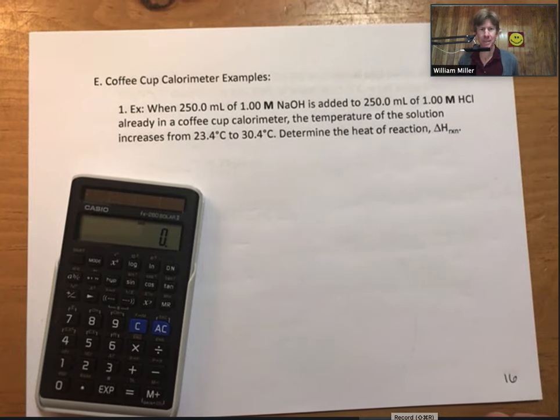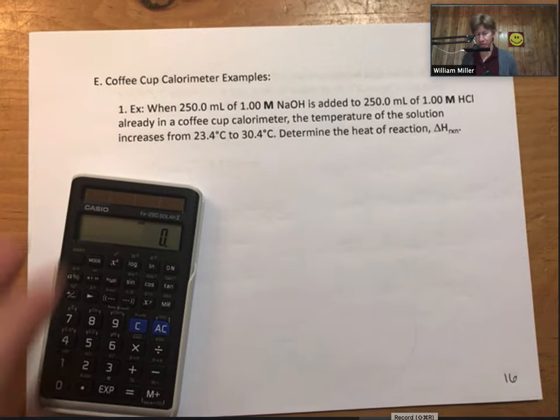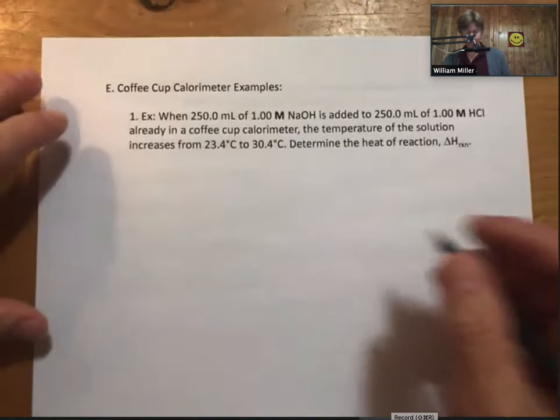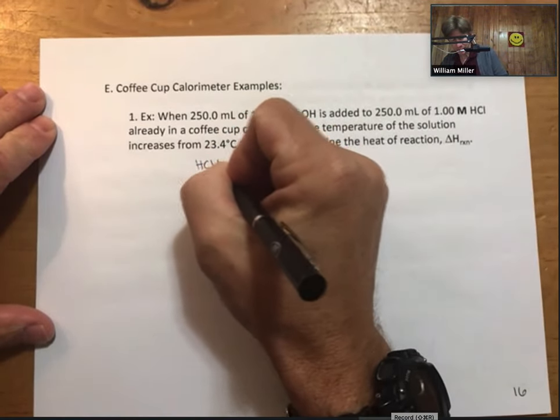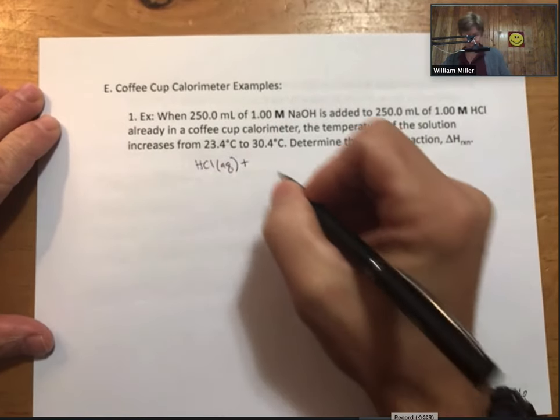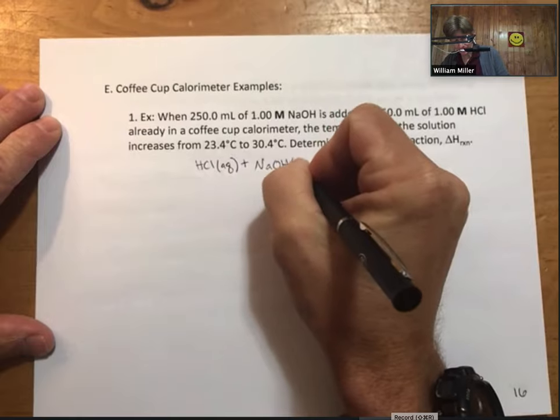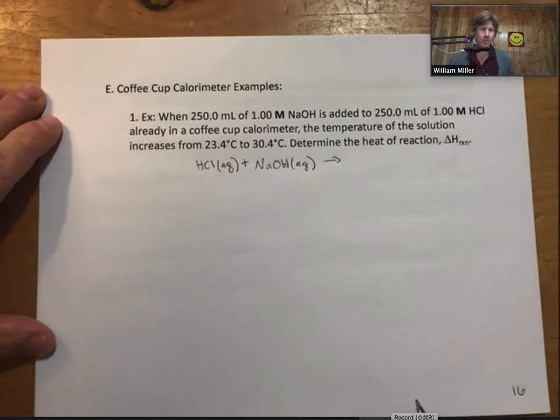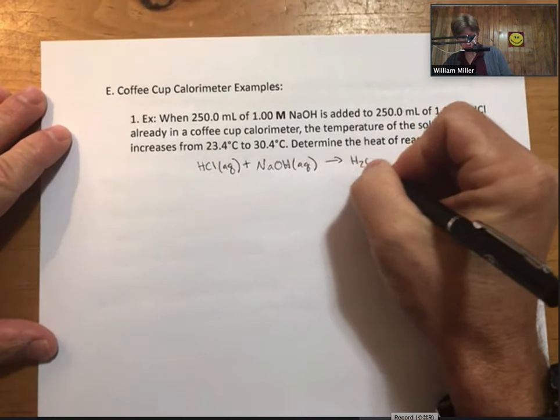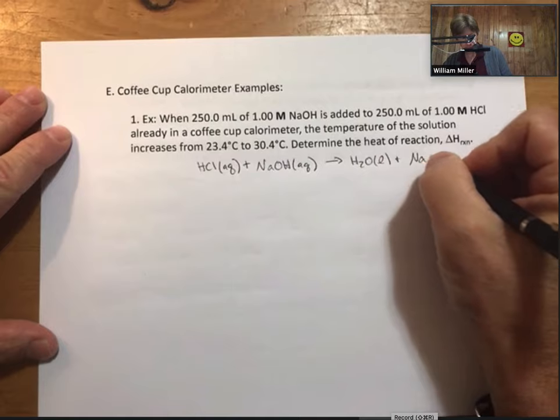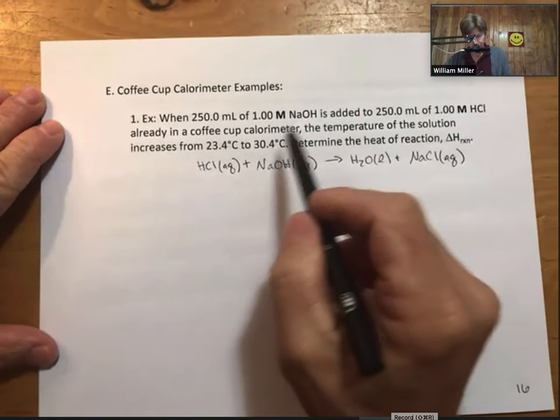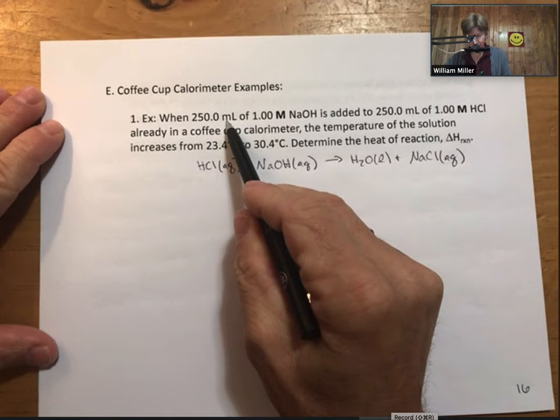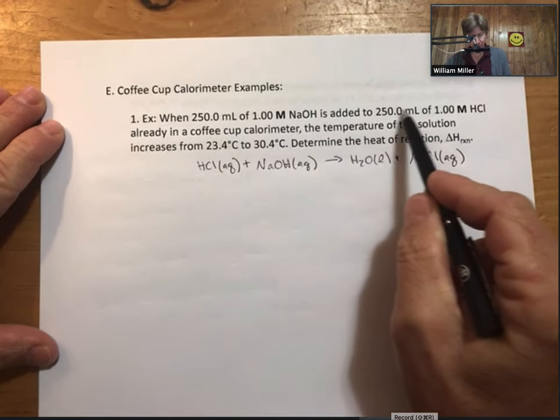The coffee cup calorimeter examples - we'll start with this one in which we are mixing sodium hydroxide and hydrochloric acid. We need to know the reaction. The reaction is a very familiar reaction. If this were an exam, the reaction would be given. It's going to be hydrochloric acid plus sodium hydroxide reacts to produce water and sodium chloride.